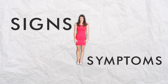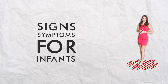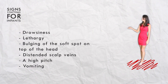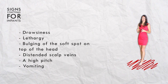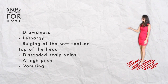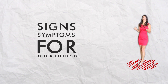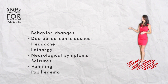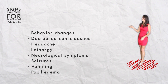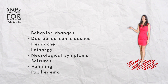Signs and symptoms for infants include drowsiness, lethargy, a bulging fontanelle — which is the soft spot on the top of the infant's head — distended scalp veins, a high-pitched cry, and vomiting. Signs and symptoms for older children and adults can include behavioral changes, decrease in consciousness, headache, lethargy, neurological symptoms including weakness, numbness, eye movement problems, double vision, seizures, vomiting, and papilledema, which is optic disc swelling in the eye.